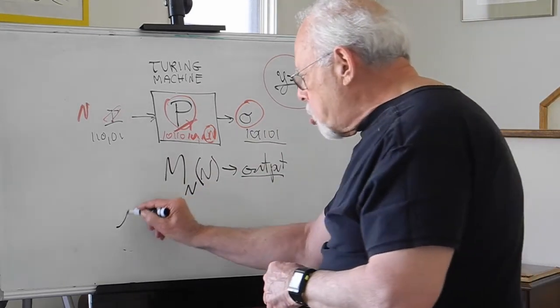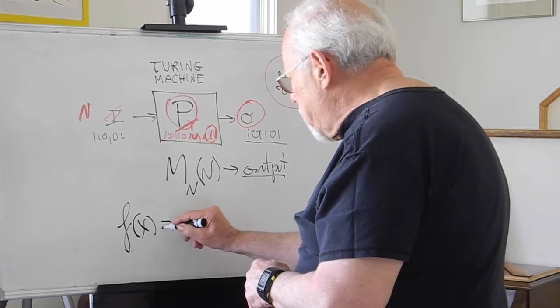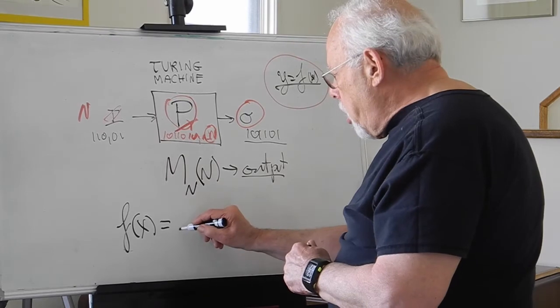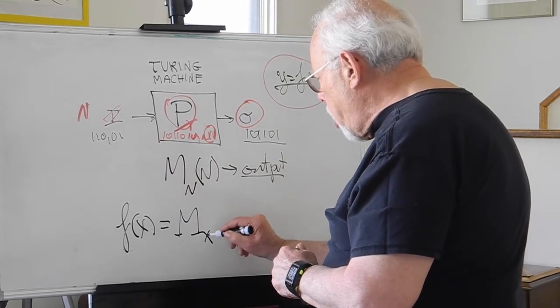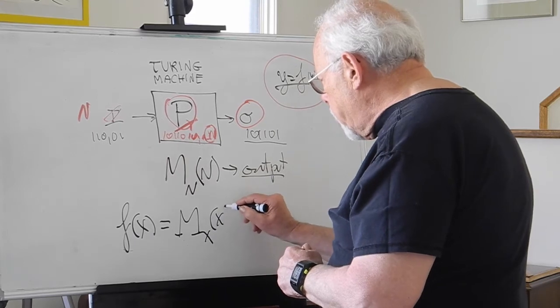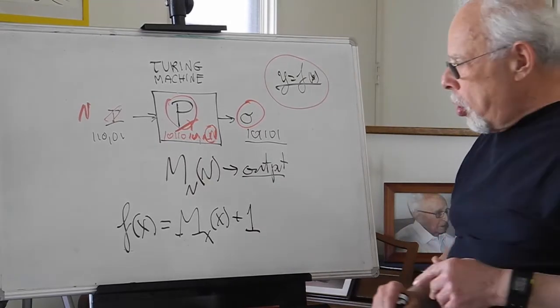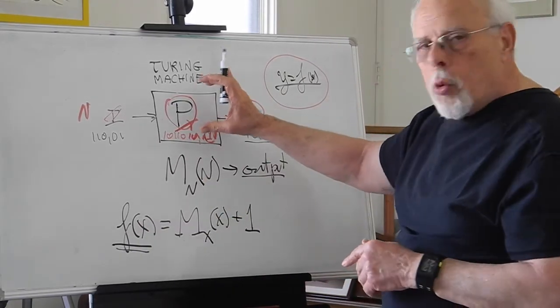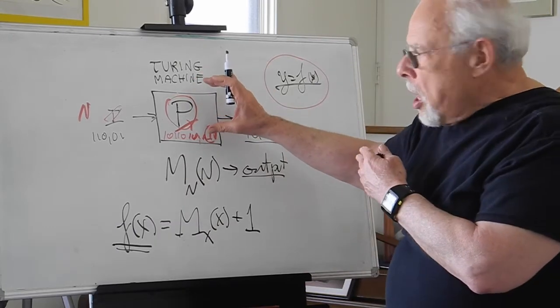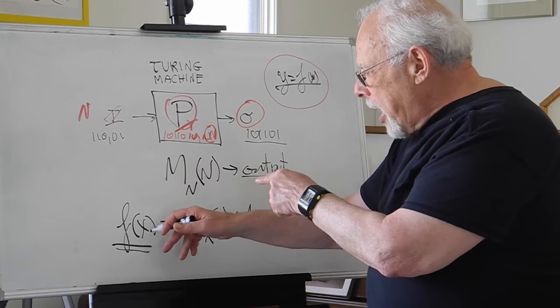Let's define a function F this way. It's a Turing machine that has a program X, and you feed that input X, and you add 1. Turing has shown that this F does not have an equivalent machine that will compute F of X.